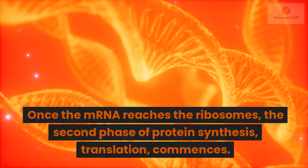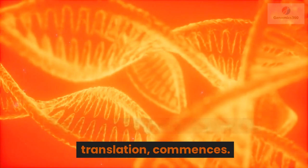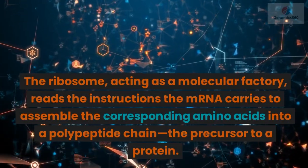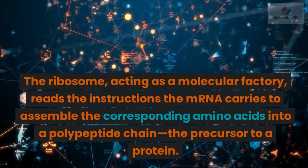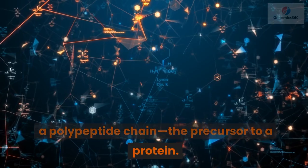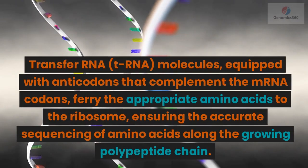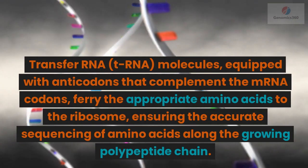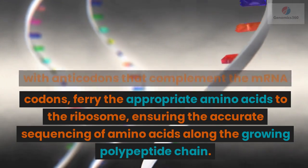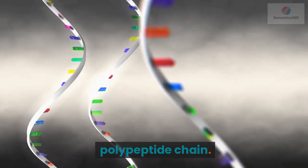Once the mRNA reaches the ribosomes, the second phase of protein synthesis, translation, commences. The ribosome, acting as a molecular factory, reads the instructions the mRNA carries to assemble the corresponding amino acids into a polypeptide chain — the precursor to a protein. Transfer RNA, tRNA, molecules equipped with anticodons that complement the mRNA codons, ferry the appropriate amino acids to the ribosome, ensuring the accurate sequencing of amino acids along the growing polypeptide chain.